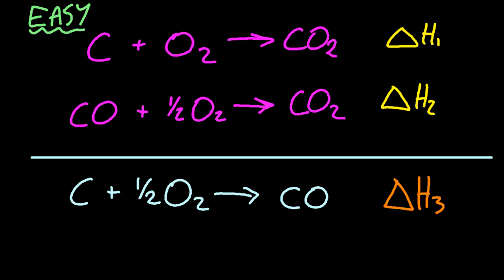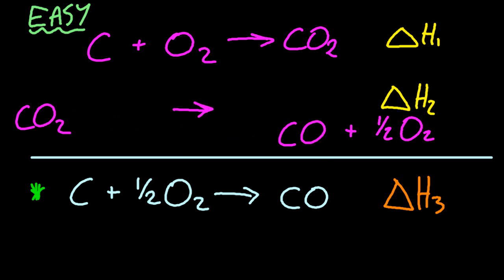So if I had two equations at the top, and I want to work out how to get the energy for the third equation, well, I'm allowed to do certain things to the top equations. I'm allowed to double them, triple them, half them, I'm even allowed to flip them round. And when I add them up, they've got to equal the bottom equation.